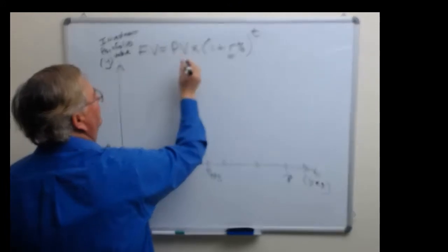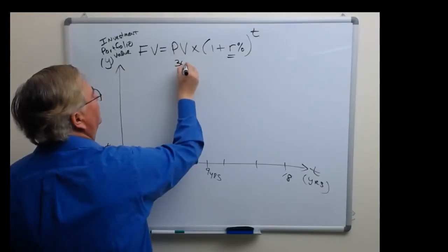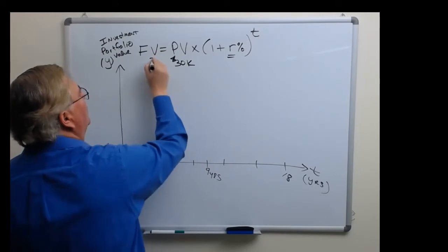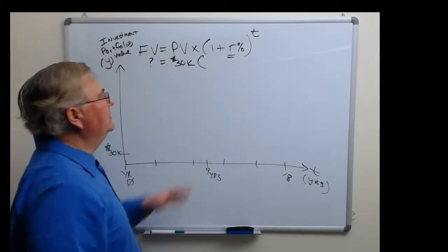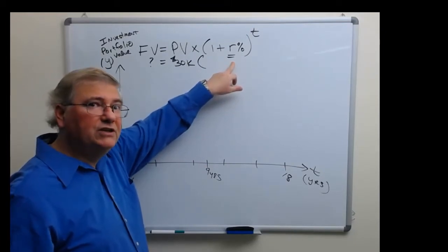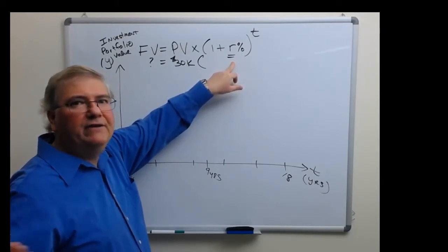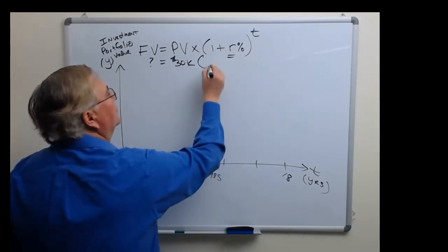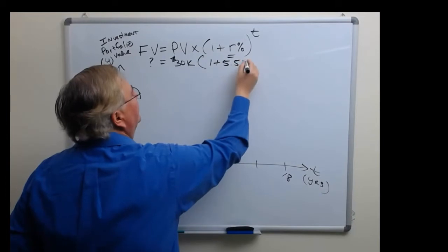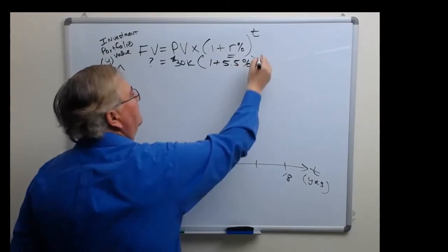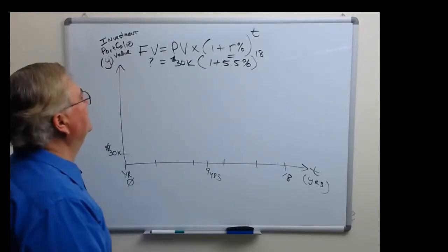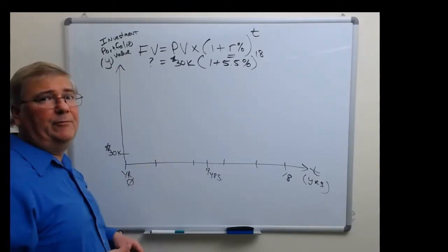So our present value of this investment portfolio is 30k, thirty thousand dollars, and the question is what is the future value assuming a conservative growth rate of let's say five percent a year, six percent a year, let's say five and a half percent a year. So let's say the investment portfolio is growing at 5.5 percent a year and that'll be for 18 years, t equals 18. This is a useful application of a future value formula.